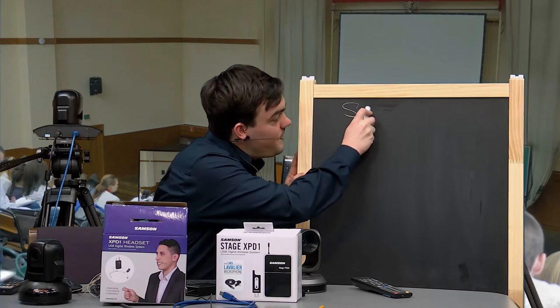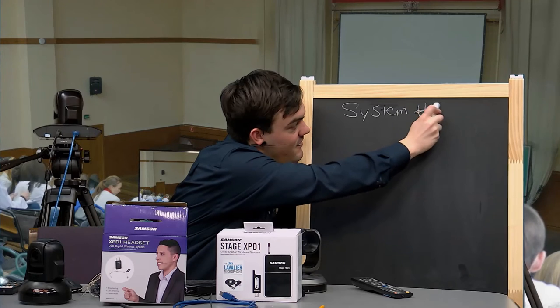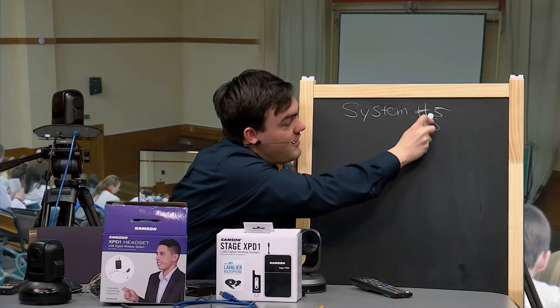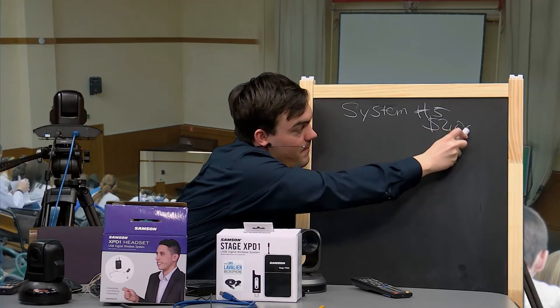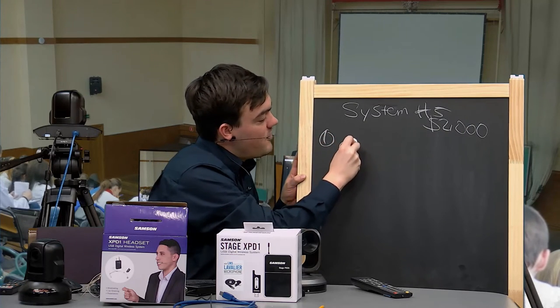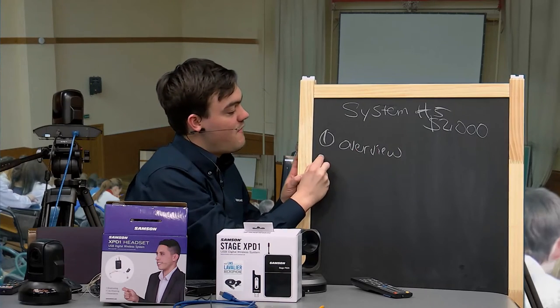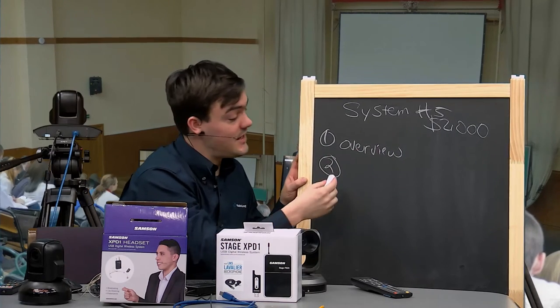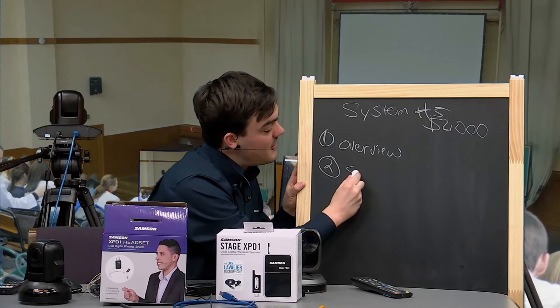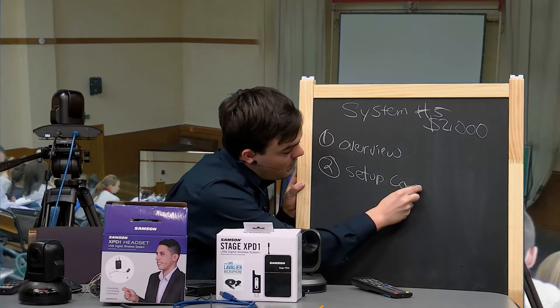So this is system number five. This is roughly a $2,000 budget and first what we'll do is an overview. So we will look at the system overview and we'll show how everything plugs in and how everything sets up. Then we'll set up the cameras.